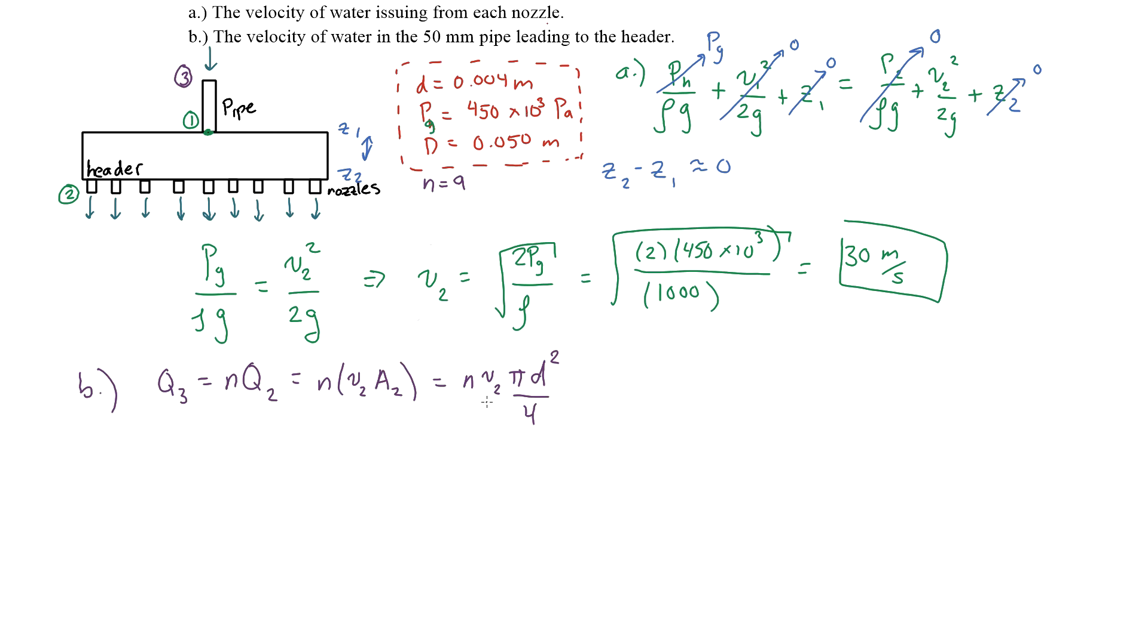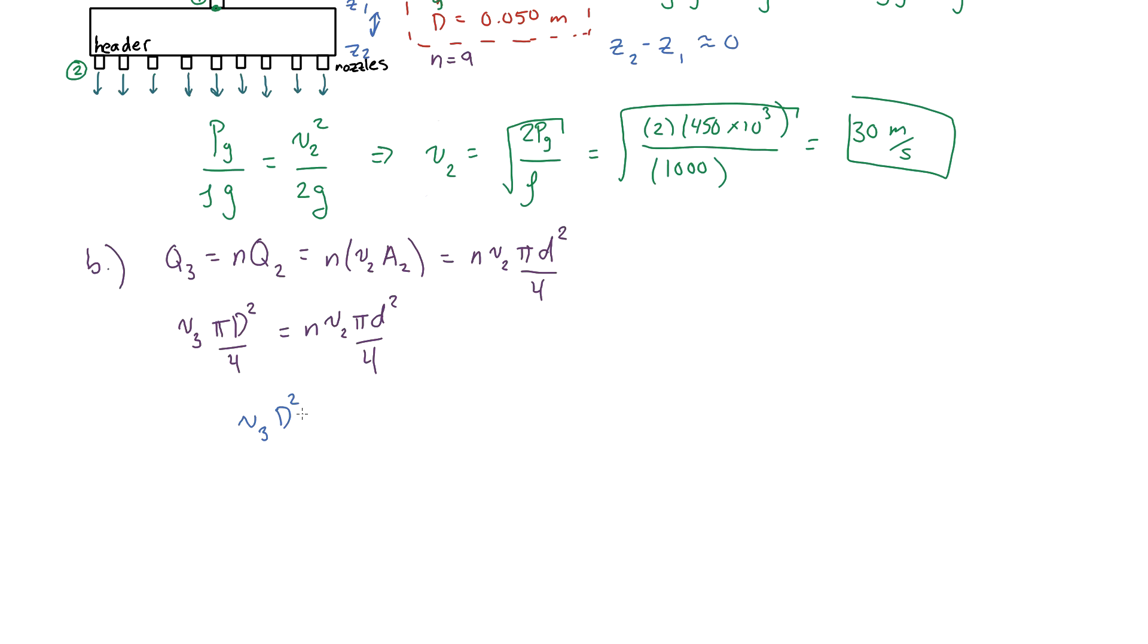And we simply apply the same formula for the flow rate at 3 without the multiplier of 9 because it doesn't have more than one entrance. So we could say the velocity at 3 times the area. Now that we have this relationship, all we have to do is solve for V3. Now we just plug in the values for these different parameters. So n is 9 for the 9 different nozzles, and then the ratio of the diameter is squared. Then you simply multiply by the velocity at 2, which we found in part A, which is 30 meters per second.